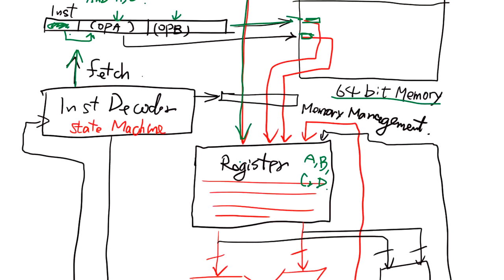Now instruction decoder has a memory management. So depending on this instruction, it's ordered to fetch the data from memory. So the memory management has memory address and has an instruction read or write to the memory.